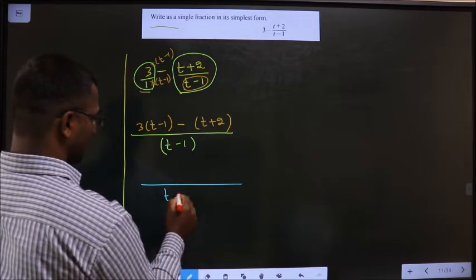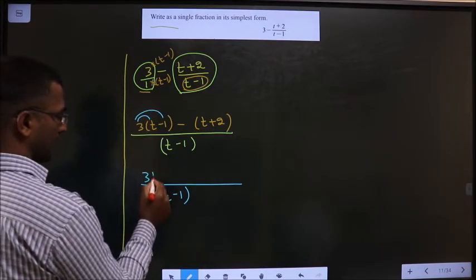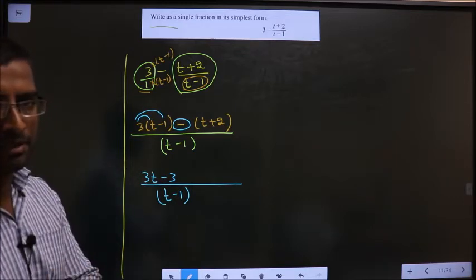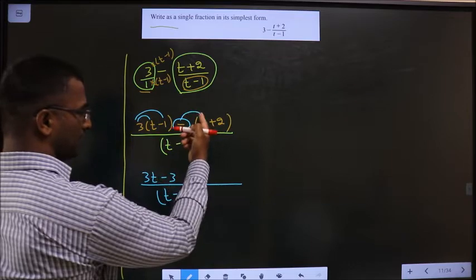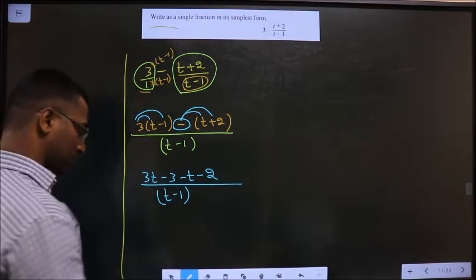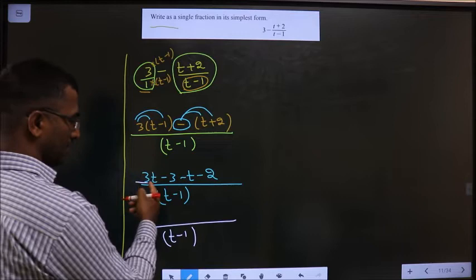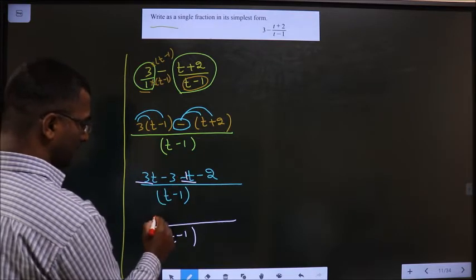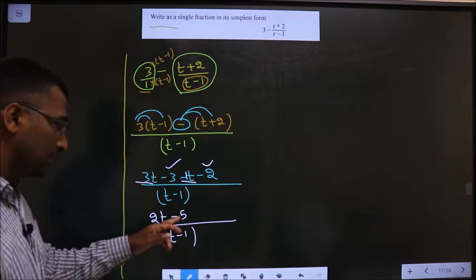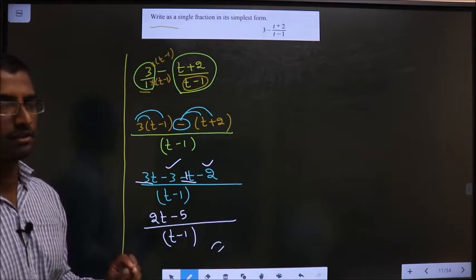The denominator stays the same. In the numerator, open up the bracket: 3 times (t-1) gives 3t minus 3. Many students make the mistake of neglecting the negative sign — you should multiply with the negative sign, so minus t and minus 2. Now collect like terms: 3t minus t is 2t, and minus 3 minus 2 is minus 5. Since 2t and minus 5 are unlike terms, we cannot simplify further. The answer is (2t - 5)/(t - 1).